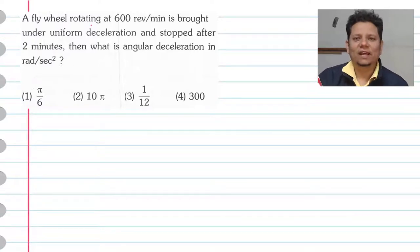Next question. A flywheel rotating at 600 revolution per minute is brought under uniform deceleration and stopped after 2 minutes. Then what is the angular deceleration in radian per second square?